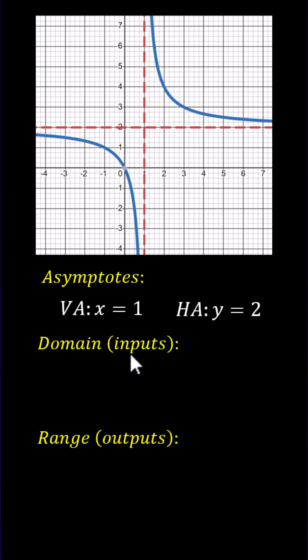The domain is a set of all possible inputs, normally x values. To determine the domain, we analyze the graph from left to right.